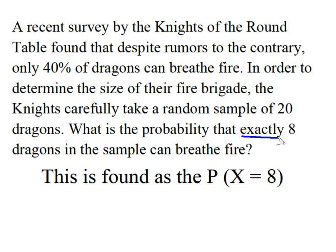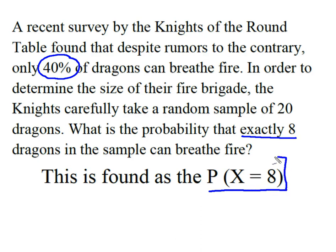When we're looking at these binomials, we know that 40% of the dragons can breathe fire. That means the other 60% can't, giving us a binomial distribution. We want the probability of exactly eight dragons breathing fire, so that gives us the probability solving for X equals 8.